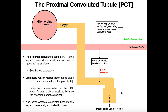Hopefully the functions of the proximal convoluted tubule make sense. In the next video, we're going to discuss the loop of Henle and also countercurrent multiplication, which is a very important process in the nephron. Please make sure to like this video and subscribe to my channel for future videos and notifications. Thank you very much.